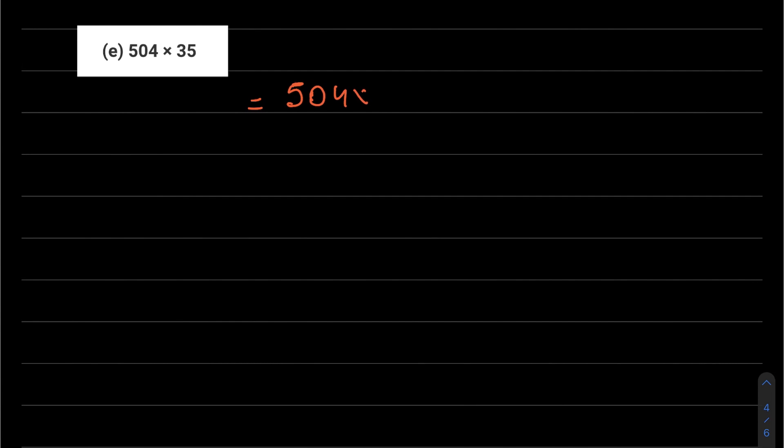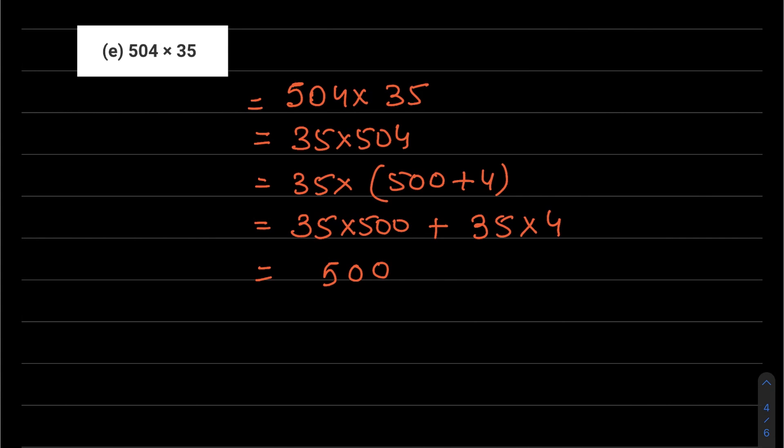The answer is 5,34,375. Part e: 504 into 35. We can write this as 35 into 504, which is 35 into 500 plus 4. This becomes 35 into 500 plus 35 into 4. 35 into 500, write two zeros first. 5 fives are 25, 5 threes are 15, 16, 17. 35 into 4: 4 fives are 20, 4 threes are 12, 13, 14. If you add this, you will get 17,640.